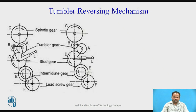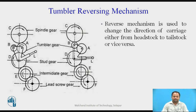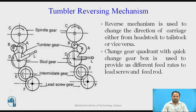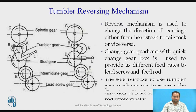Tumbler reversing mechanism. Whenever we need to remove more material, we initially take a forward speed to remove material. When we apply the tumbler reversing mechanism, the carriage runs in reverse, placing the tool back at the original starting position so that metal is continuously removed. This reversing mechanism changes the direction of the carriage either from headstock to tailstock or vice versa. A change gear quadrant with quick change gear box provides different feed rates to the lead screw and feed rod. The sole purpose of the tumbler gear mechanism is to reverse the direction of the lead screw and the feed rod automatically.